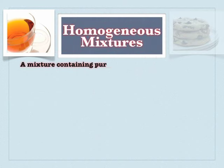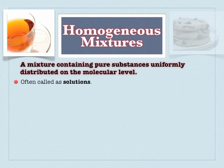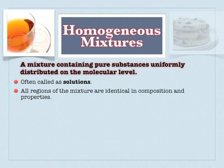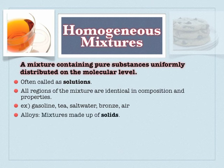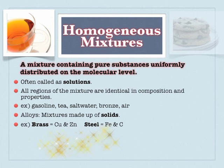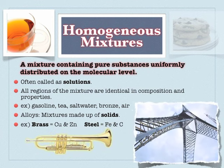A homogeneous mixture is uniform throughout — often called a solution. Diet cola, tea, and gasoline are examples of mixtures distributed at a molecular level. Homogenized milk is a great example: you expect it to be uniform throughout with no different layers. One type of homogeneous mixture is an alloy — a mixture made up of solids. Brass and steel are both alloys: homogeneous mixtures of copper and zinc, and iron and carbon, respectively — just two of the many types of alloys out there.